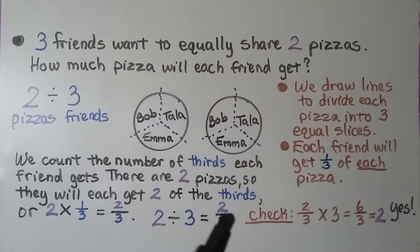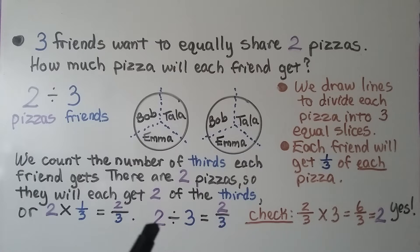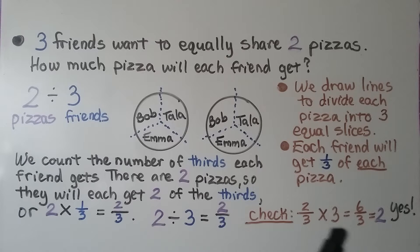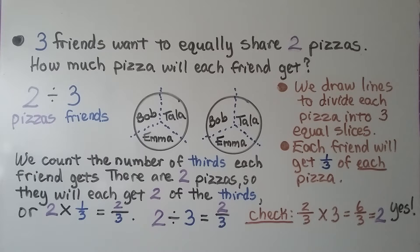It's 2 pizzas divided by 3 friends, equal to 2 thirds. We can check this with multiplication — multiply 2 thirds times 3, and if it equals the dividend 2, we did it right. 2 thirds times 3 is equal to 6 thirds, which simplifies to 2. So yes, we did it correctly.